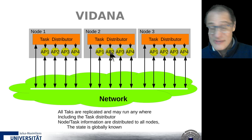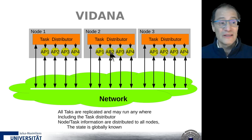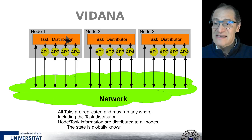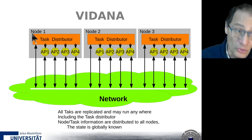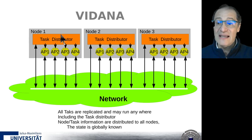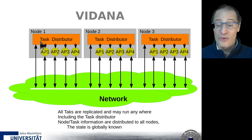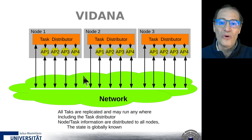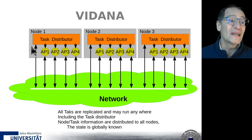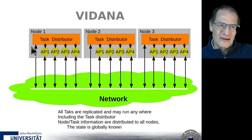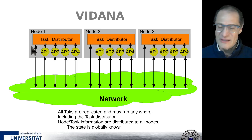We can start every application two, three, or four times according to reliability or dependability requirements. Also, each node's task distributor collects information about the node - for example, the load - to implement load balancing. The task distributor not only tells each task when to be activated, it also knows the load of its local node and sends this information to all other task distributors, so every task distributor can compare its own load with others and decide if a task should better run on a node with lower load.